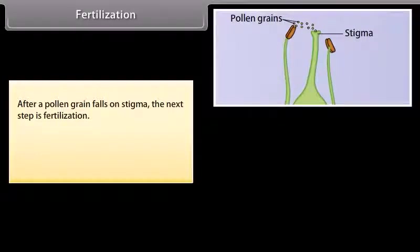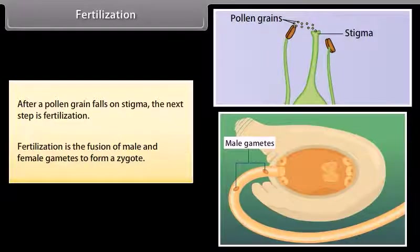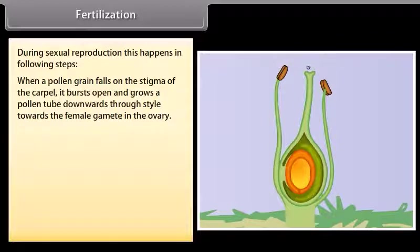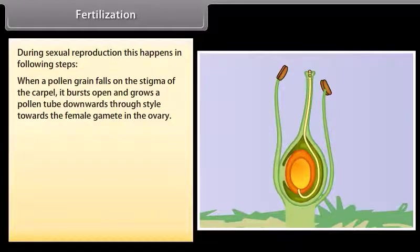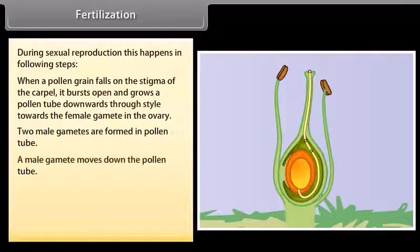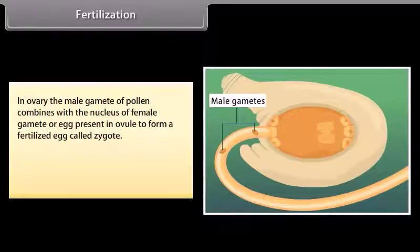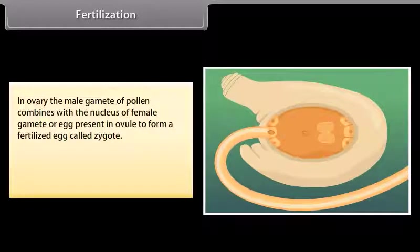After a pollen grain falls on the stigma, the next step is fertilization. Fertilization is the fusion of male and female gametes to form a zygote. When a pollen grain falls on the stigma of the carpel, it bursts open and grows a pollen tube downwards through the style towards the female gamete in the ovary. Two male gametes are formed in the pollen tube. The pollen tube enters the ovule in the ovary, and the tip of the pollen tube bursts open so the male gamete comes out. In the ovary, the male gamete combines with the nucleus of the female gamete or egg present in the ovule to form a fertilized egg called the zygote.